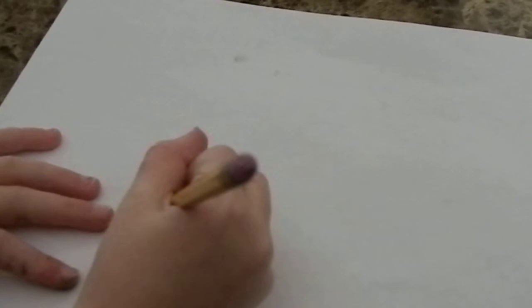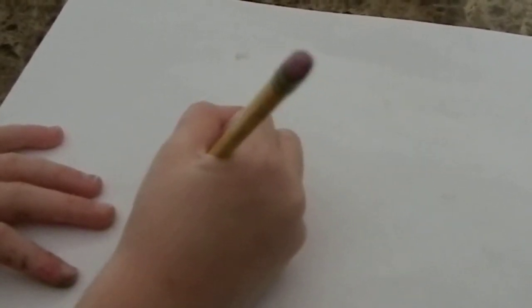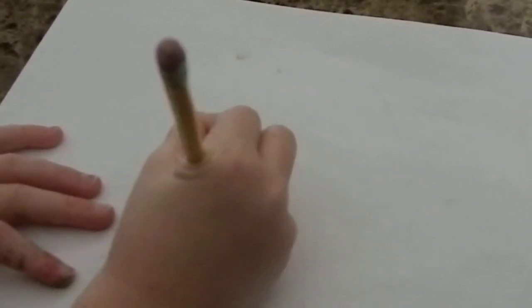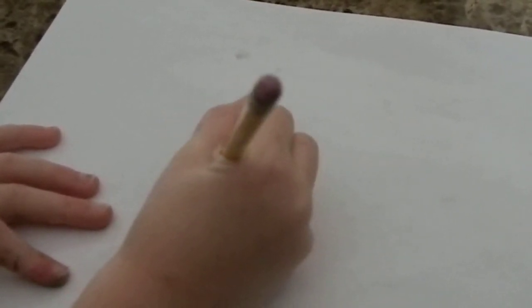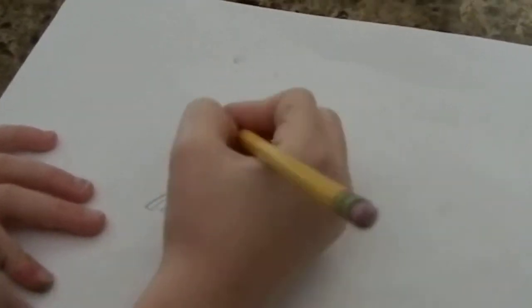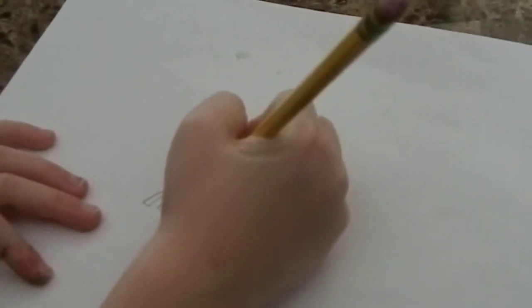Then you're going to connect those lines or make them into sticks, and then make a curve and do some points at the top. Once you're finished with that, you're going to trace it again.